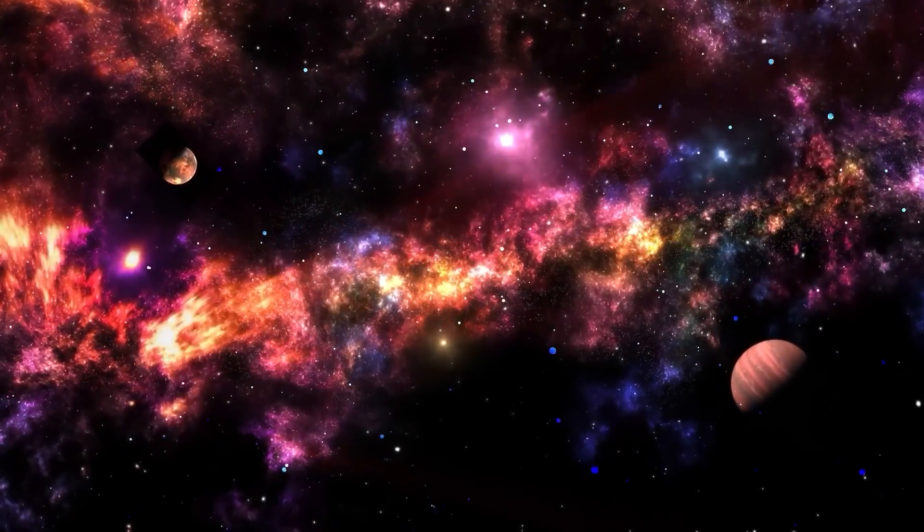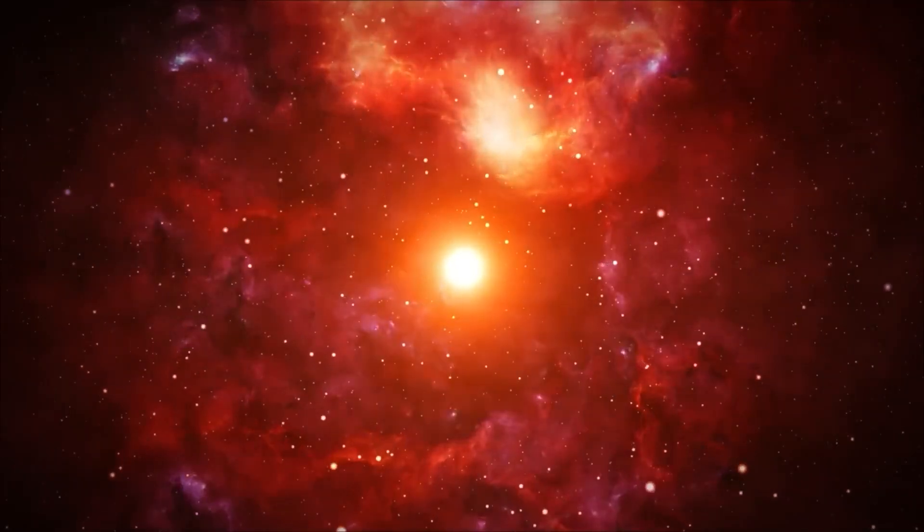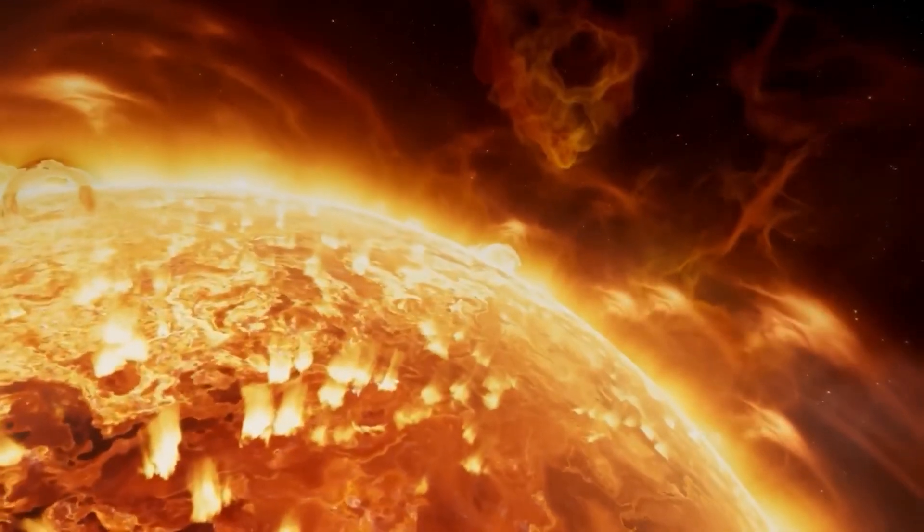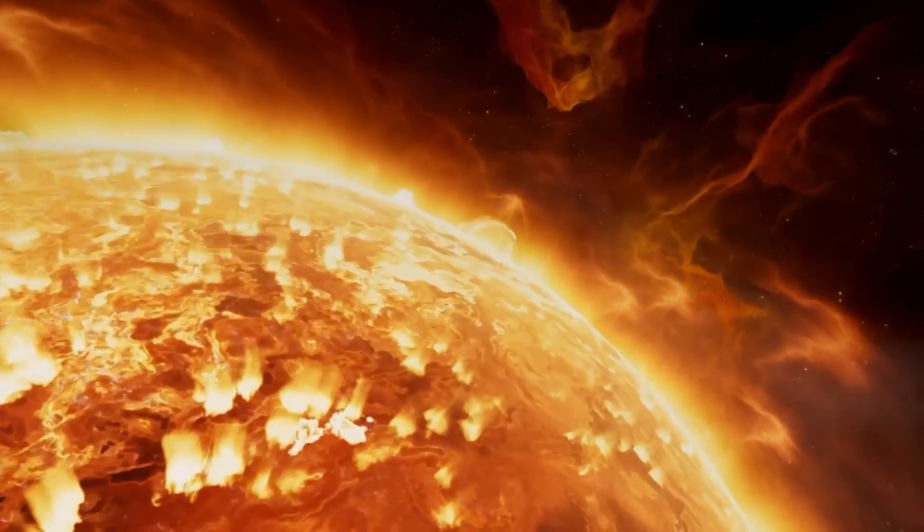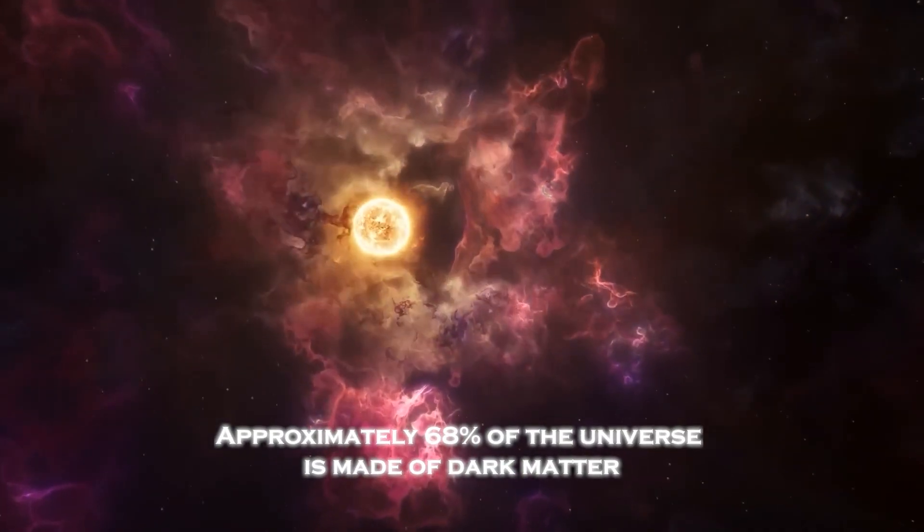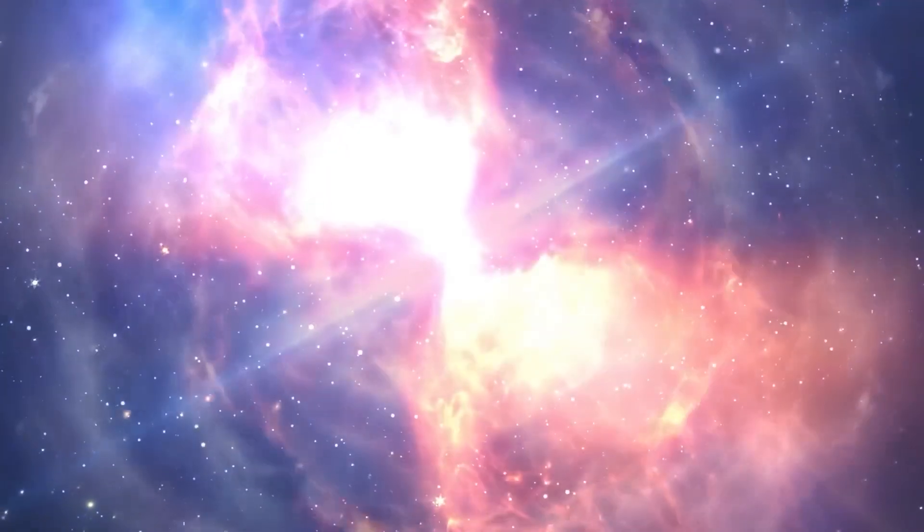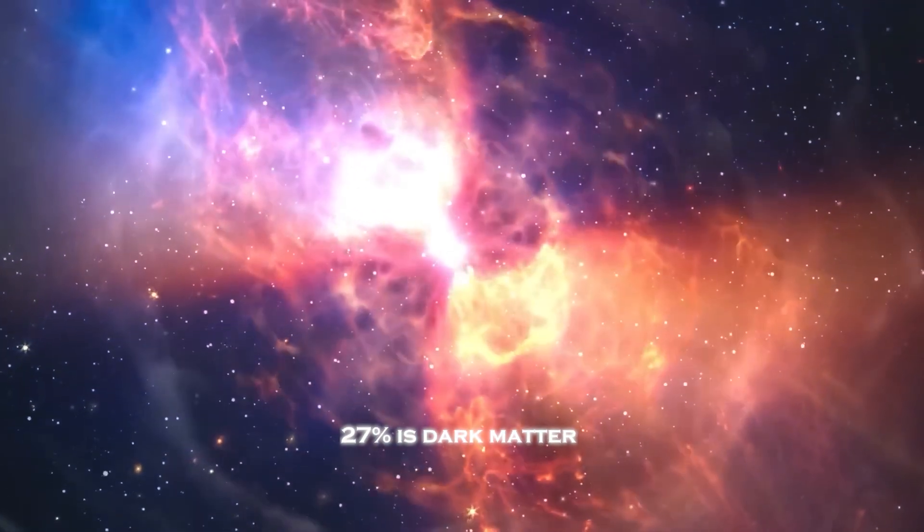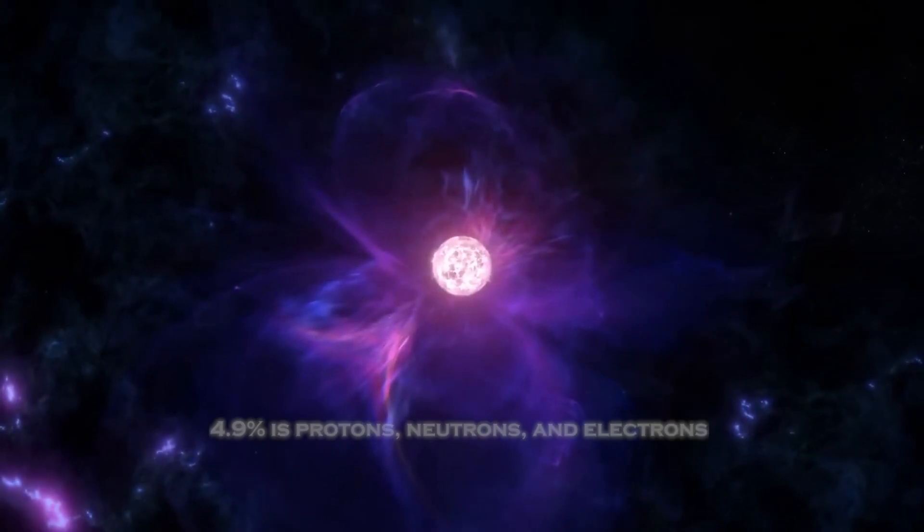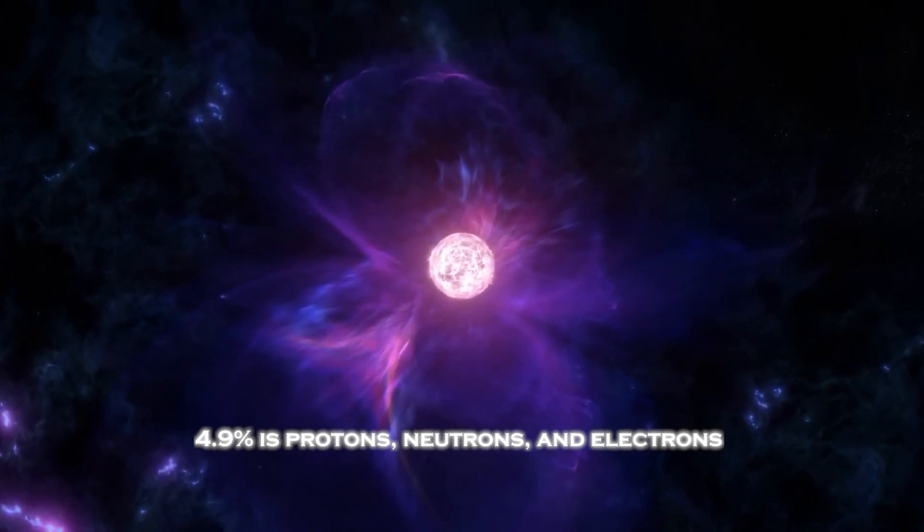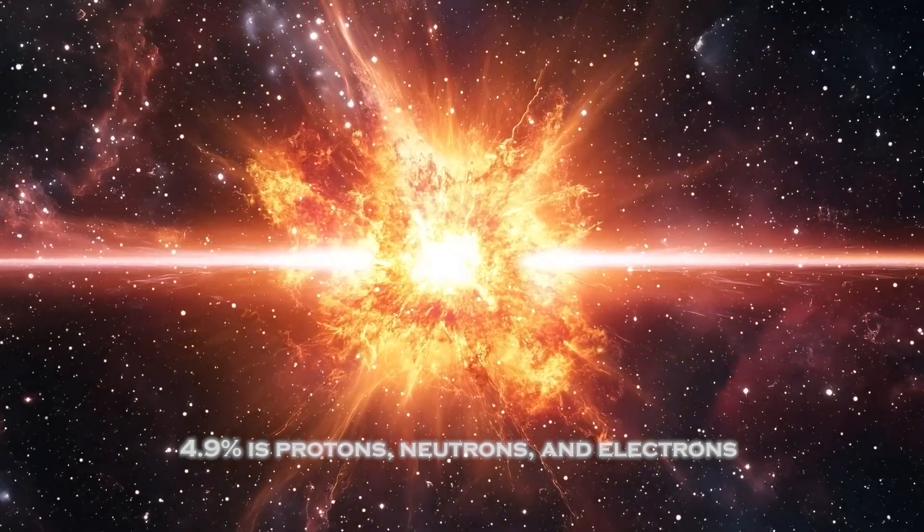In addition, the way the universe expands is determined by the different types of matter and energy present in it. This allows us to learn about its composition. Approximately 68% of the universe is made of dark energy, equivalent to a cosmological constant, 27% is dark matter, and about 4.9% is protons, neutrons, and electrons.